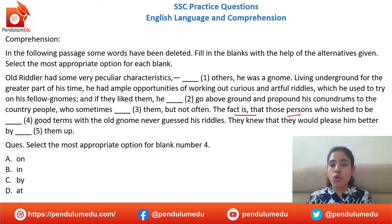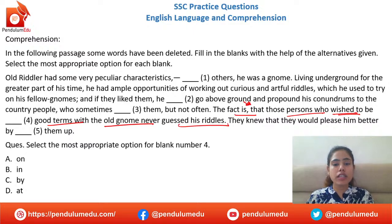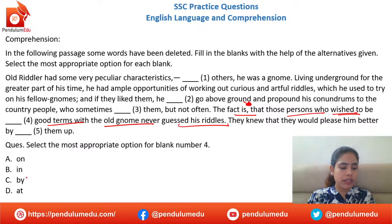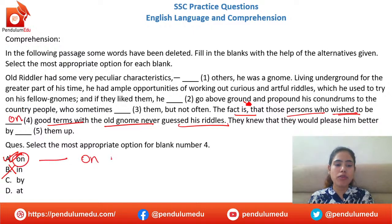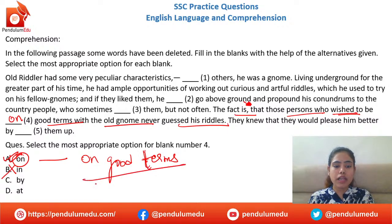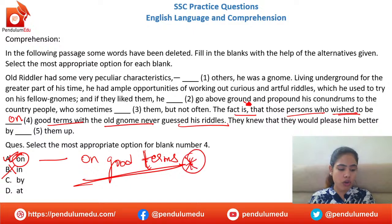Next: 'The fact is that those persons who wished to be ___ good terms with the old gnome never guessed his riddles.' Options: on, in, by, at. The fixed phrase is 'on good terms' — not 'in good terms.' For example: 'I am not on good terms with him.' Option A — 'on' — is correct. Please remember this phrase: 'on good terms.'